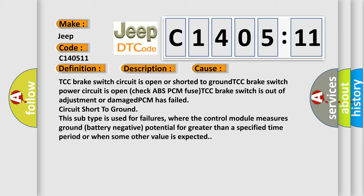This subtype is used for failures where the control module measures ground battery negative potential for greater than a specified time period or when some other value is expected.